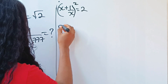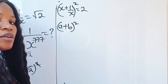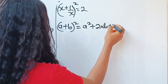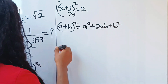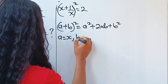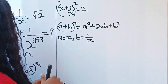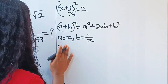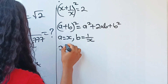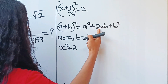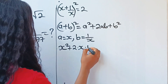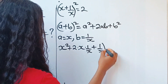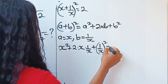Now, when you have (a + b)² in algebra, this is equal to a² + 2ab + b². In this case, a is equal to x and b is equal to 1 over x. So let's substitute into this equation. We'll have x squared, plus 2 multiplied by x multiplied by 1 over x, plus (1 over x) squared, all equal to 2.